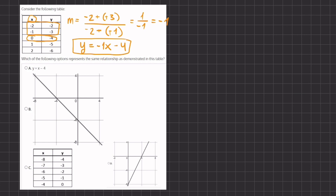Option A states that y equals positive x minus four. This is really close to representing our function but we have a positive x here instead of a negative one, and therefore A will be eliminated.